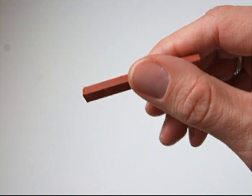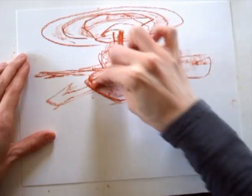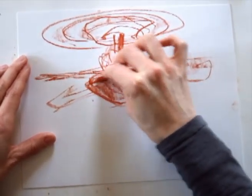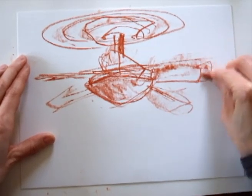A Conte crayon is a cuboid-shaped drawing stick used by artists. Depending what part of the crayon contacts the paper, different types of marks are made: sharp lines with a corner, broad lines with an edge, and wide textured fills using the side.